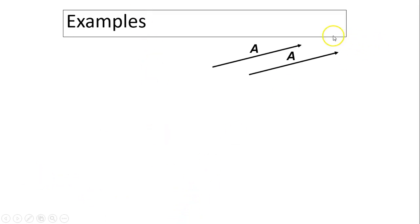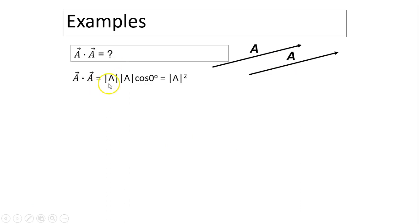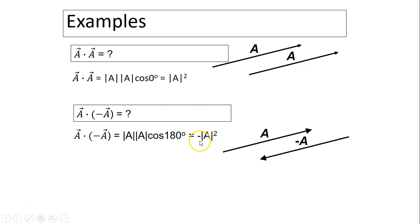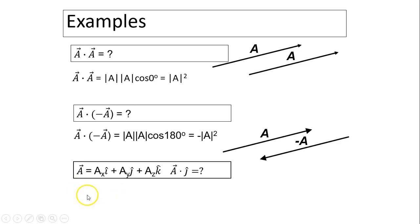Some examples. For two parallel vectors, a dot a equals the magnitude of a times the magnitude of a times cosine 0 degrees, which equals a squared. For anti-parallel vectors, a dot negative a: the angle is 180 degrees, cosine 180 is negative 1, so the result is negative a squared. For a dot j, using the component method, the j·i term is 0, j·j gives 1, and j·k is 0, so the answer is just ay.